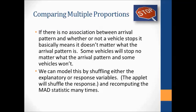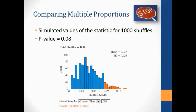If there's no association between arrival pattern and whether a vehicle stops, it doesn't matter what the arrival pattern is. Developing a null distribution uses the same shuffling model — we shuffle the explanatory variable (or the applet shuffles the response), just like comparing two means but with three groups instead of two. After each shuffle, we compute the MAD statistic as a point in the null distribution. The null distribution here shows a p-value that isn't really small but is out in the tail — so we have moderate evidence against the null. A larger sample size might show a clearer difference.